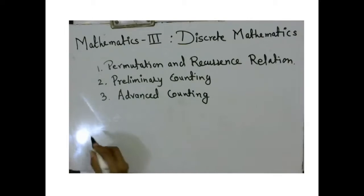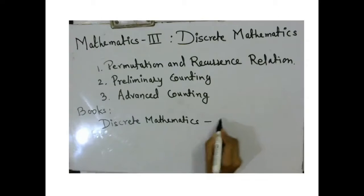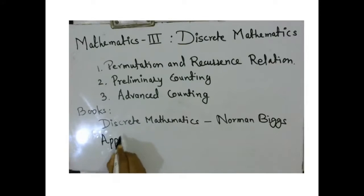The books recommended for this course are the Discrete Mathematics book by Norman Biggs and the second book is Applied Combinatorics by Alan Tucker.